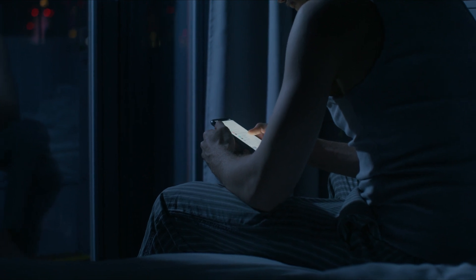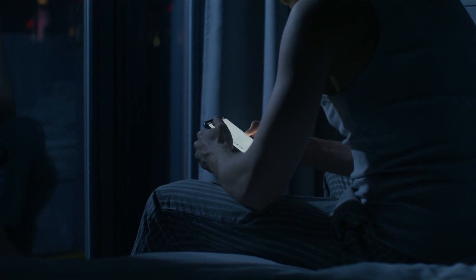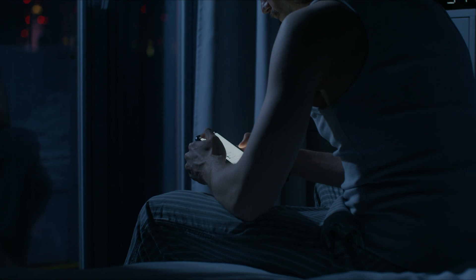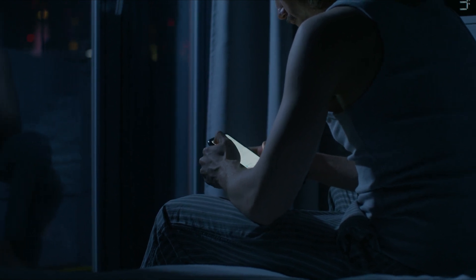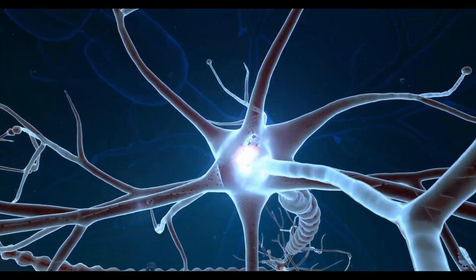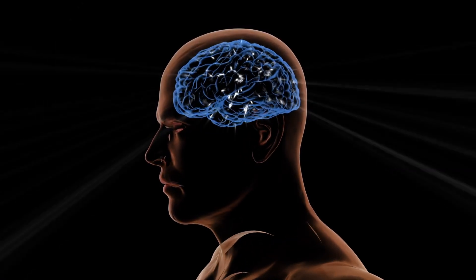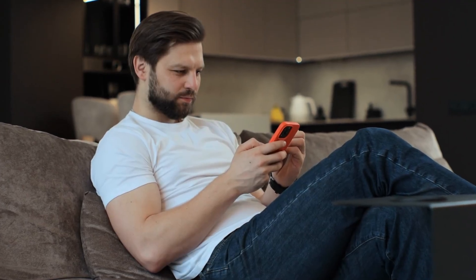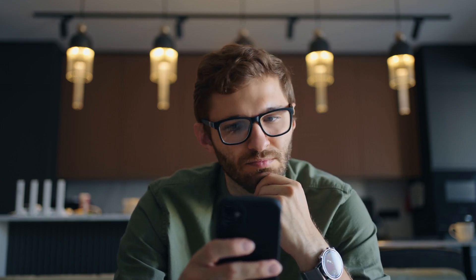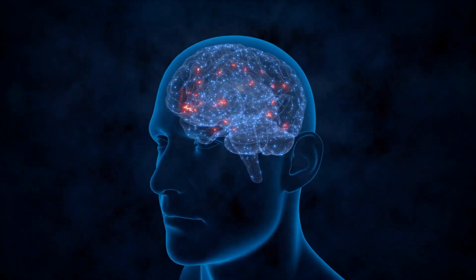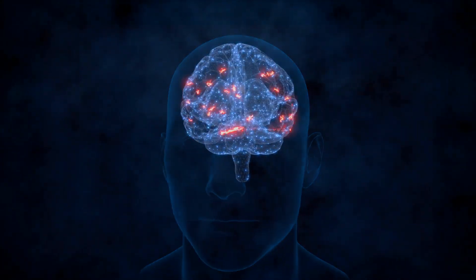If you interact with dramatic content, you'll see more drama. If you linger on negativity, the algorithm assumes that's what you want. And here's the scary part. Your brain adapts to whatever you consume most. If you're fed outrage, you become more reactive. If you're fed superficiality, your thinking becomes more shallow. If you're constantly exposed to curated perfection, your self-image can suffer. The algorithm shapes your feed, your feed shapes your brain, and your brain shapes your reality.